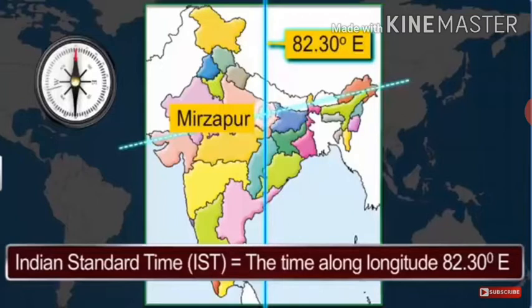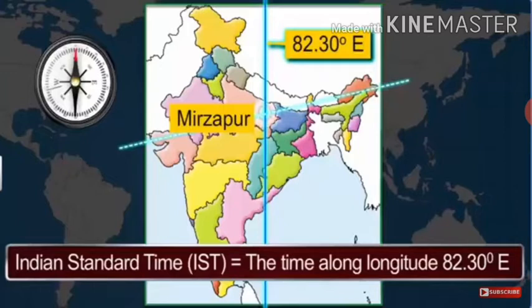Which places in India experience sunrise first and last respectively? Arunachal Pradesh experiences sunrise first and Saurashtra in Gujarat last. Which longitude represents the standard meridian of India? The answer is longitude of 82 degrees 30 minutes east. India selected this value because it is divisible by 7 degrees 30 minutes, a standard adopted by almost all the countries of the world, and it lies almost in the middle of India.